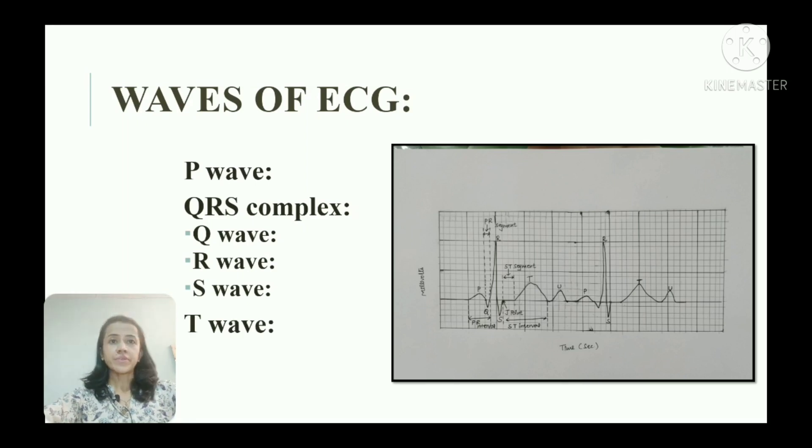Next is T wave, a positive deflection representing ventricular repolarization. T wave is present in the same direction of QRS complex because ventricular repolarization follows a path opposite to depolarization. Duration of T wave is 0.27 second and amplitude is 0.3 mV. End of T wave coincides with closure of semilunar valve.